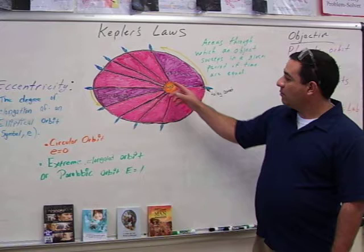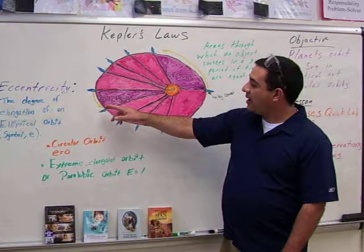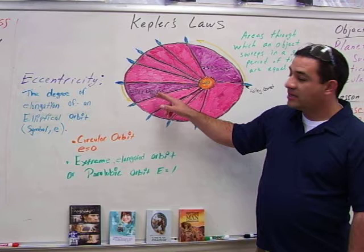What he proved through mathematics was that in this period right here of 2313 days, this was the same as when Halley's Comet reached the outer solar system — that period would also be 2313 days again. So that's what his second law of motion was.